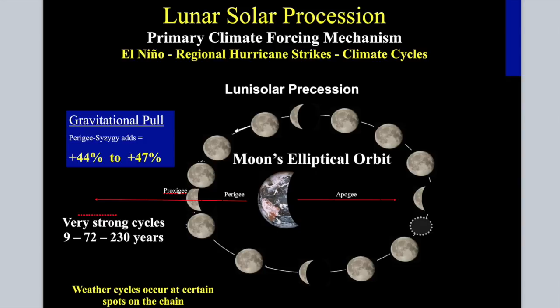These cycles aren't only about close approach and alignment, but also the elevation in the sky, because the moon changes from as much as 28 to 29 degrees below the equator to about 28 to 29 degrees above the equator. This is a four-year cycle where it goes from the northern hemisphere to the southern hemisphere. And it takes eight to nine years for it to get back to the northern hemisphere at the relatively same elevation in the sky. That's your nine-year cycle.